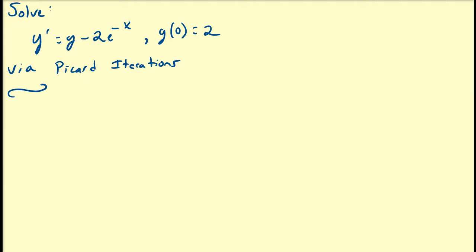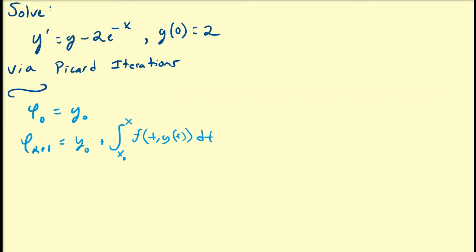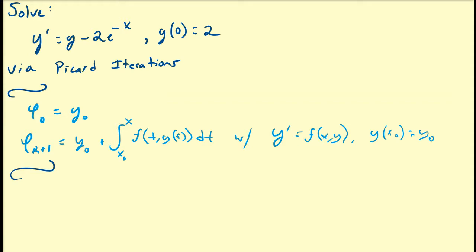Let us briefly review what the Picard iteration method actually says. It begins by defining φ₀ to be equal to y(0), the initial condition, and it defines the iterates φ_{k+1} to be equal to y(0) plus the integral from x₀ to x of f(t, y(t)) dt. Here, this refers to the equation y prime equals f(x, y) with the initial condition y(x₀) equals y₀. As long as this function f is well behaved—or Lipschitz continuous—this sequence is going to converge to the solution of the differential equation.